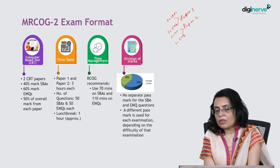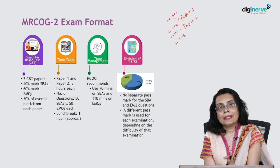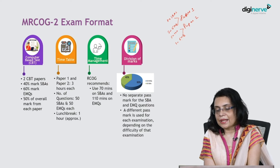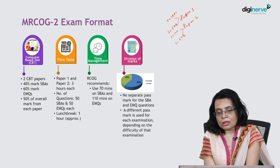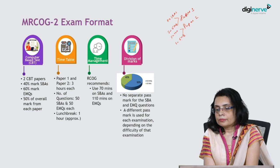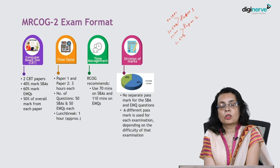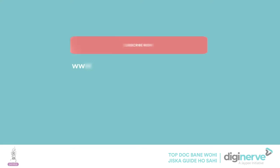It is not 2 and a half hours — it is 3 hours. So it is 3 hours for Paper 1, then 1 hour break, then 3 hours for Paper 2, making it a long exhaustive exam. There is no separate pass mark for SPAs and EMQs; the total mark is based on 50 percent of overall marks from each paper, with a weightage of 40 percent on SPAs and 60 percent on EMQs.